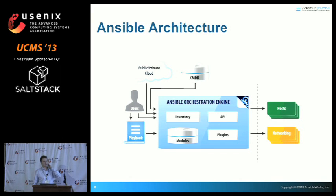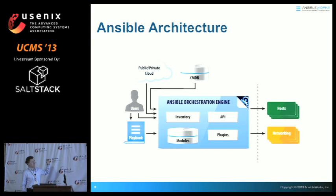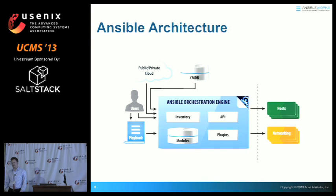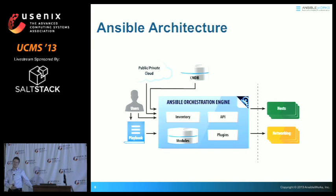We can also talk to networking devices and manage load balancers — there are modules for F5, Netscaler, Nginx, and so on. We can talk to cloud instances just as easily. One benefit of the SSH connection is that most cloud instances, whether EC2, Eucalyptus, or OpenStack, use an SSH key injected into the instance at boot. Ansible can take that private key and connect right away without any other bootstrapping.